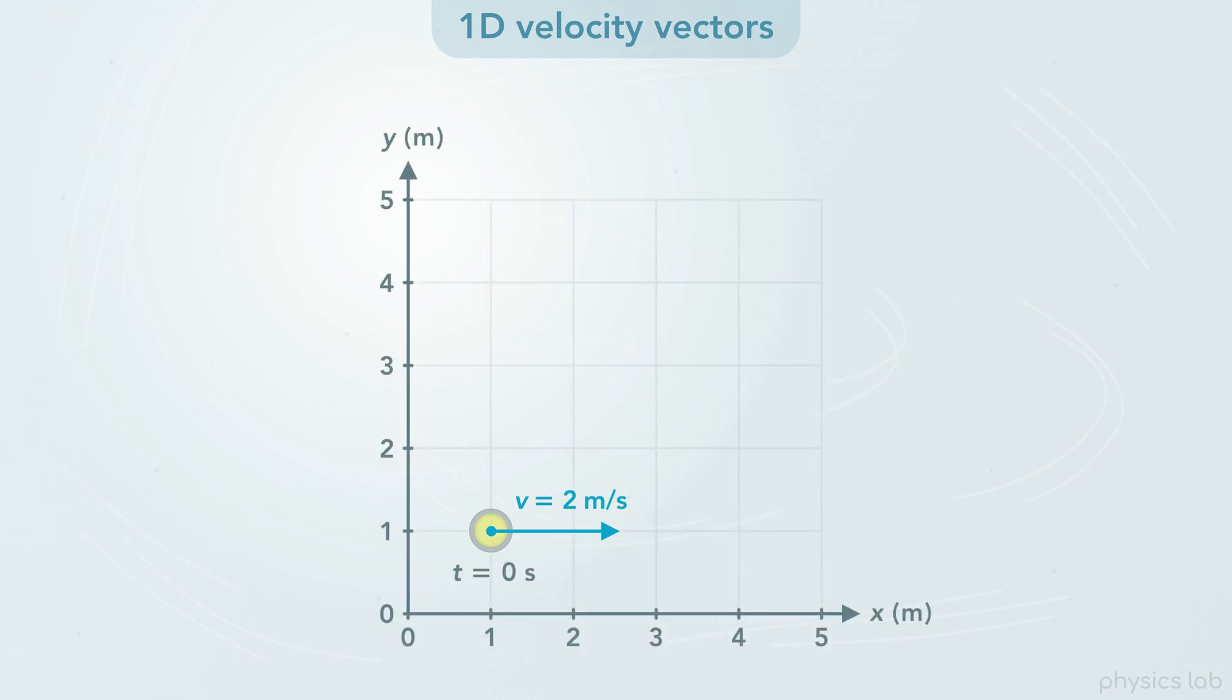So, that's the velocity vector at this initial point. What about one second later, when the stone is here? The velocity vector at this time would be the same. The stone has a constant velocity, so the velocity vector is the same at every point.